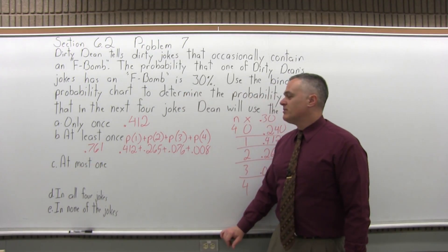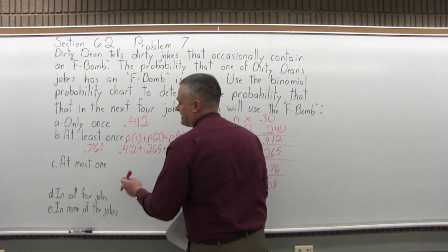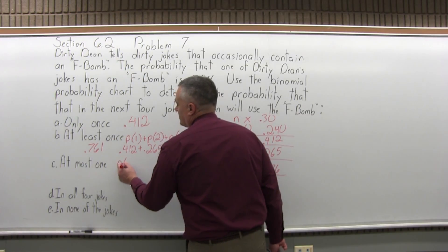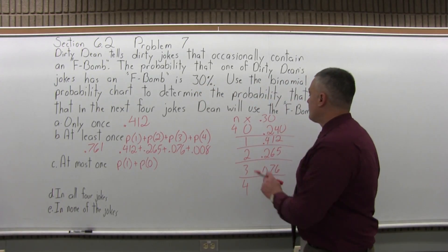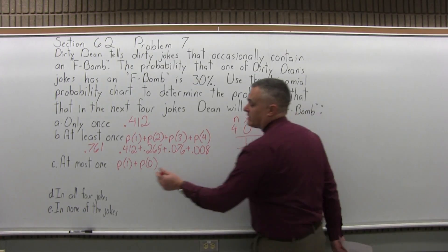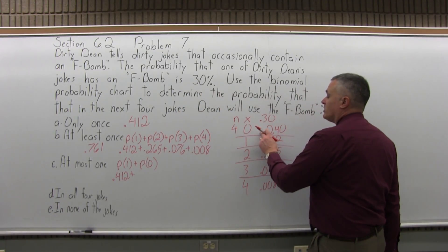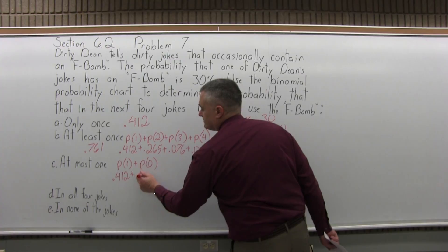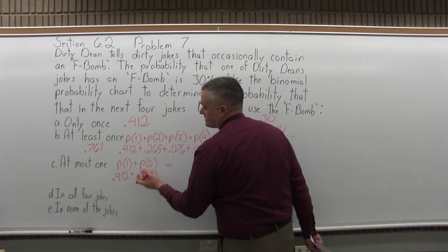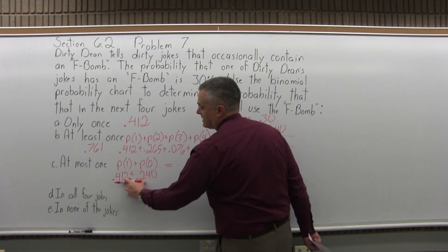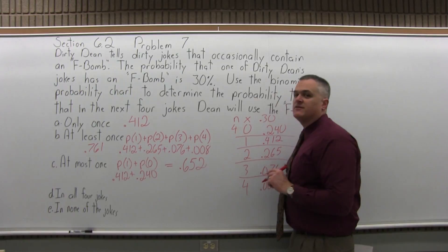What's the probability that the F-bomb appears in a joke at most once? At most once means one time is the most, so it would be the probability of just one plus the probability of none of the jokes. For one is 0.412, and for zero is 0.240. Adding 0.412 plus 0.240 gives 0.652 — about a 65% probability.